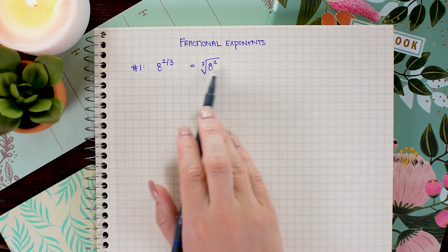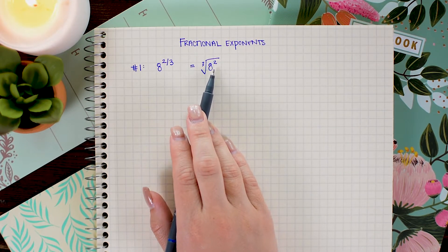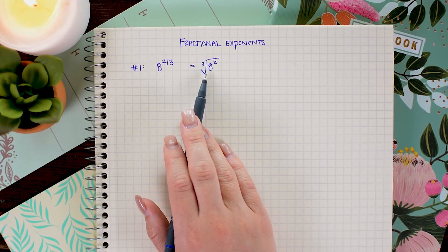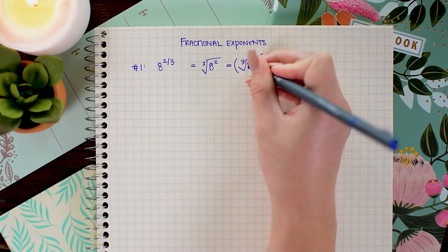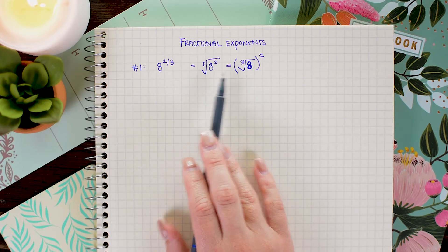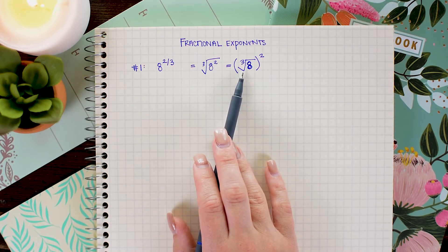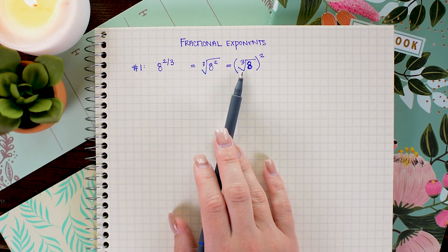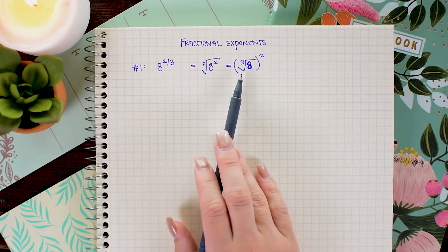So 8 to the two-thirds power is really just the same as 8 squared inside a cube root. I can choose to write the squared either directly on the 8 or outside of the cube root. Whether you use this notation or this notation is up to your personal preference, and also sometimes your problem is just a little easier to work with in one notation or the other.